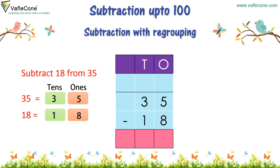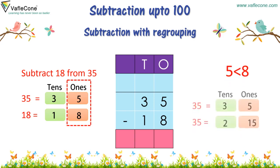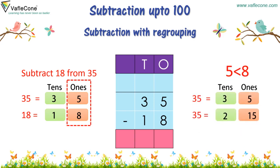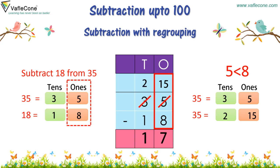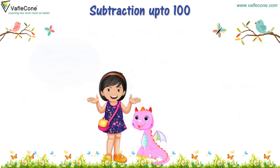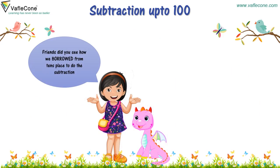But here we can see that the 1's place of 35 has 5, which is smaller than the number at the 1's place of 18, that is 8. Here, we will subtract: 8 from 15 equals 7, and 2 minus 1 equals 1. Therefore, the answer is 17. Friends, did you see how we borrowed from the 10's place to do the subtraction?